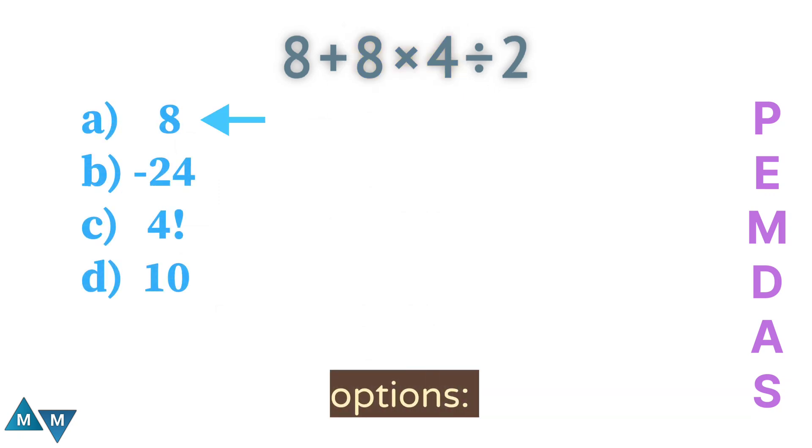Look at the options. The first one, 8, is incorrect. The second one is minus 24, which is also incorrect because our answer is a positive number.